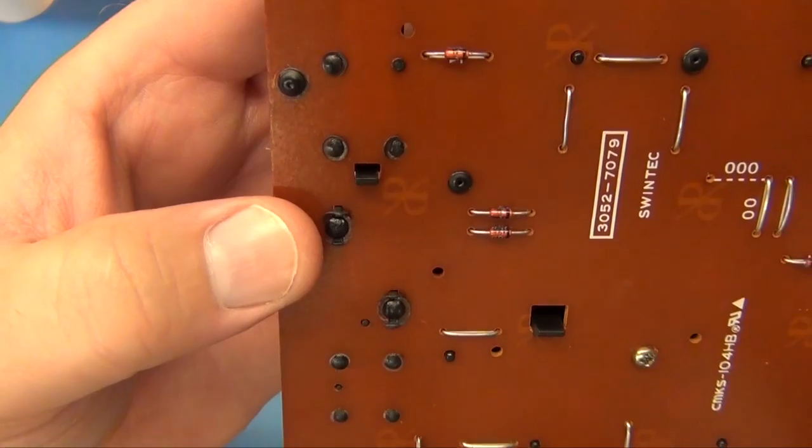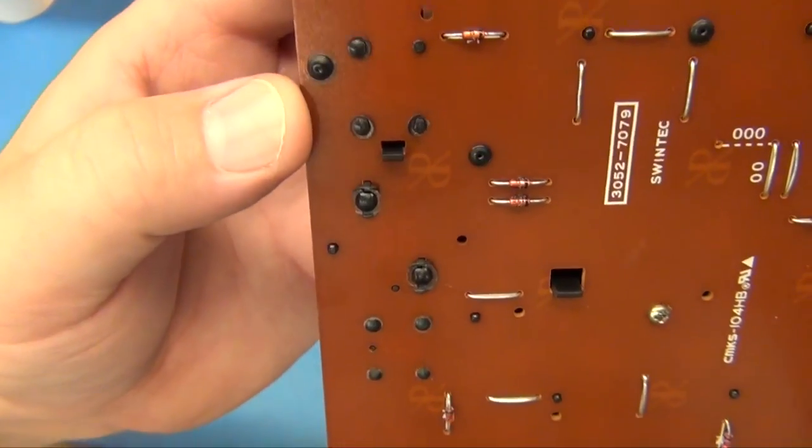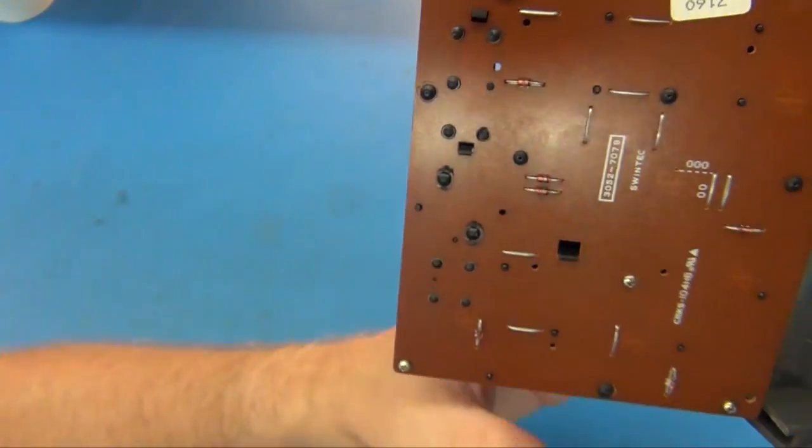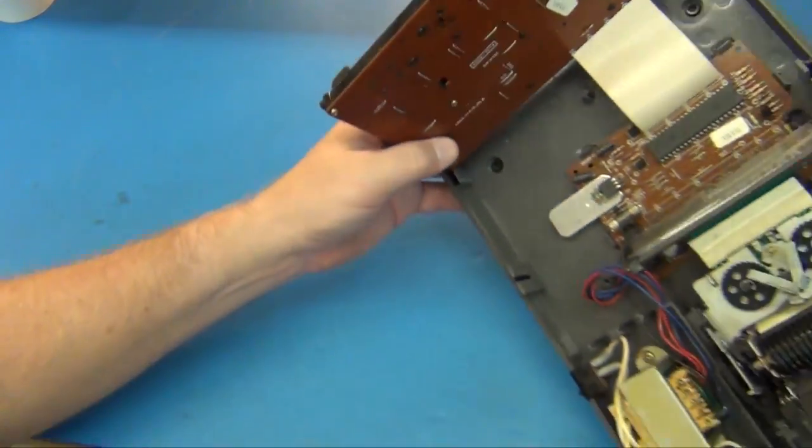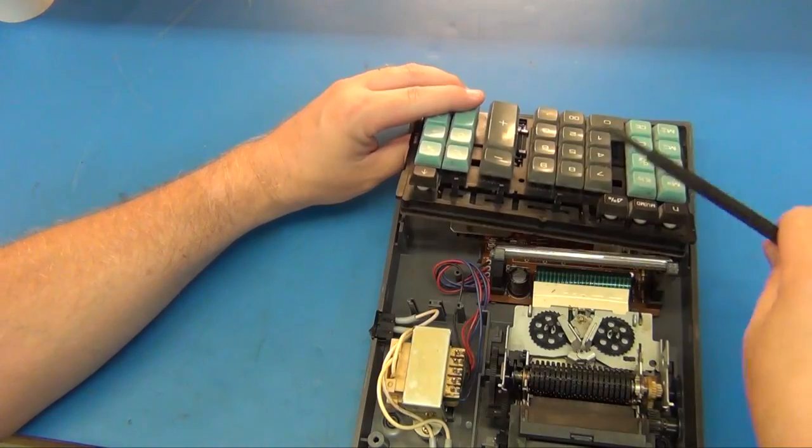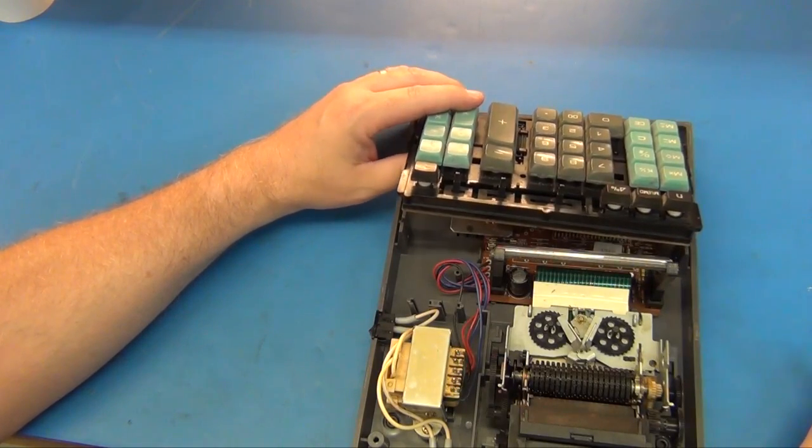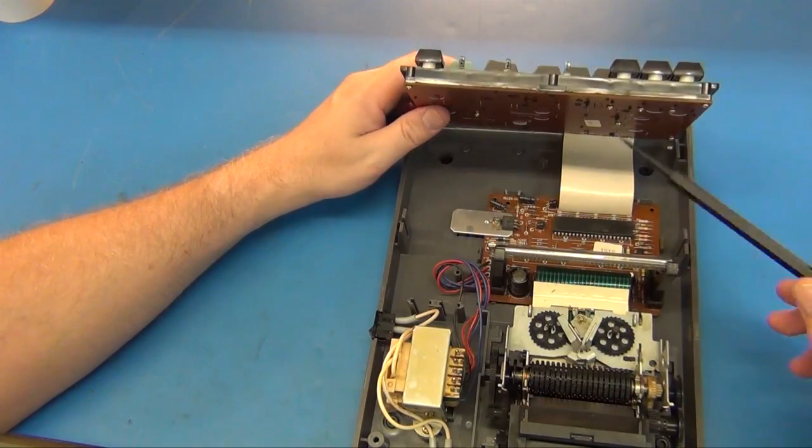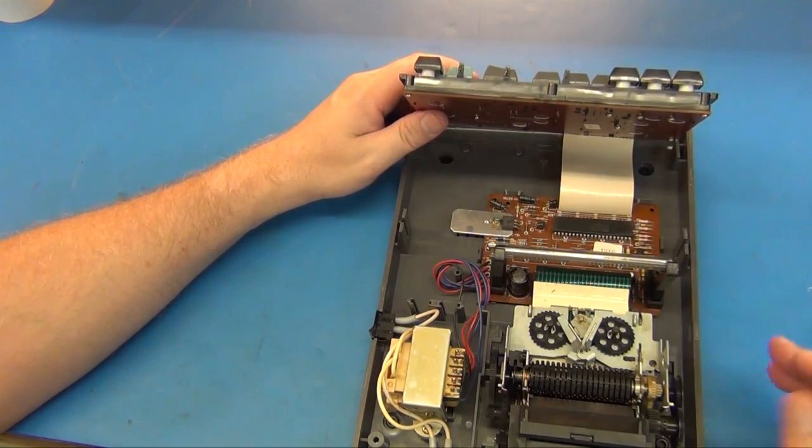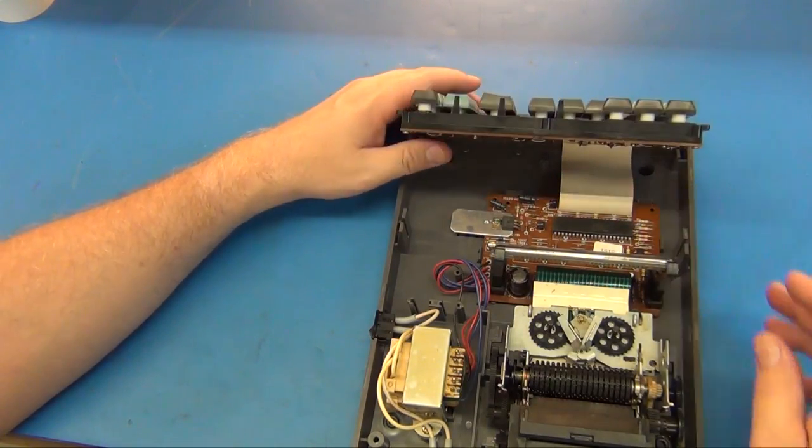That means you have to grind out these heat stakes to take that board off. And there are some screws on the corners, but really the heat stakes are accounting for most of securing this board to the keyboard structure. So I really can't take it off. And it's soldered to this main board down here. All I can do is kind of prop it up like that.